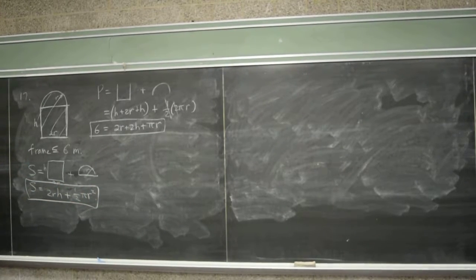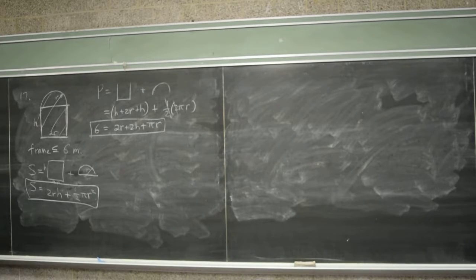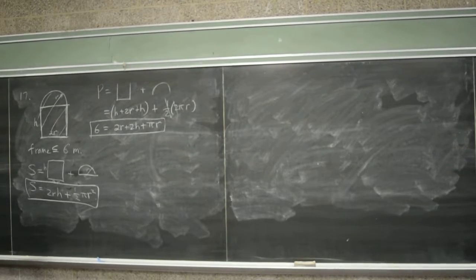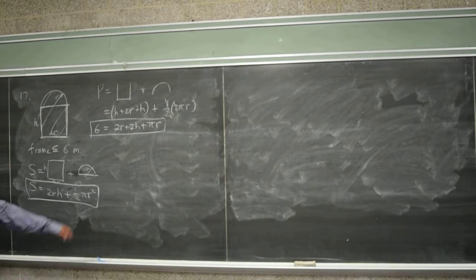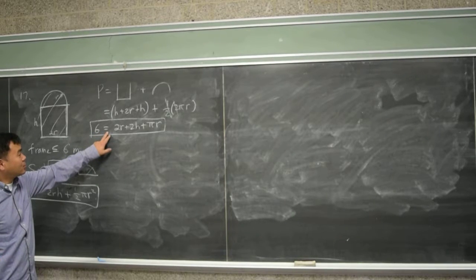Okay. What's our objective function? Target function? The surface area. We're trying to maximize the area, so this is the target function. What's our constraint? Perimeter. What do we do now? To solve for... Solve the constraints for one variable.